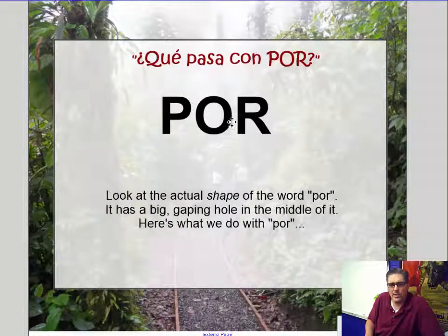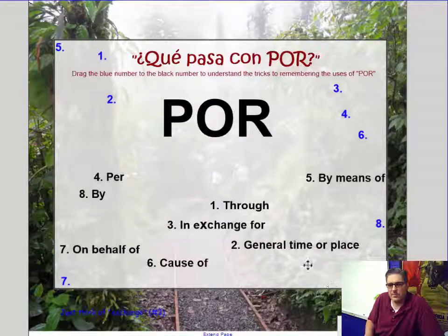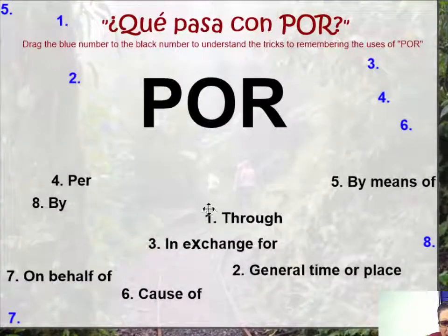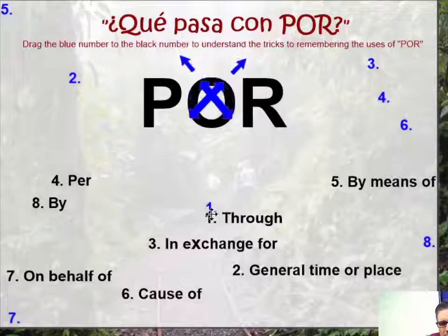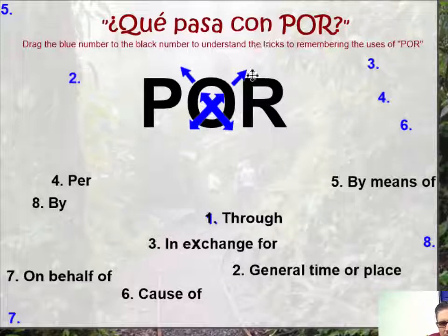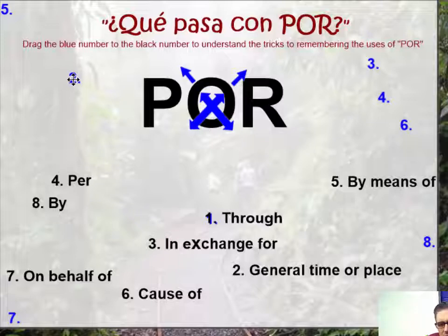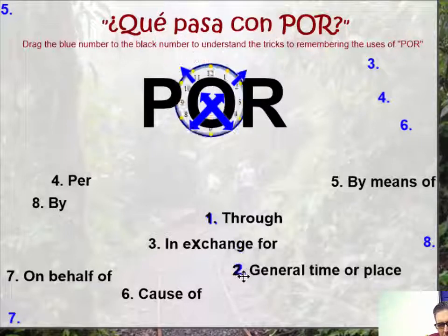If para has the arrows, what about por? Look at the actual shape of the word por — it has a big gaping hole in the middle of it. Number 1: through. You can go through that big O in the middle. I'm drawing arrows going through that hole, one way and the other way — so through. Like if I'm walking through the park, it would be por. Number 2: general time or place. That O looks like a clock — if you want to say how long you've been doing something for a general amount of time or general place, use por.